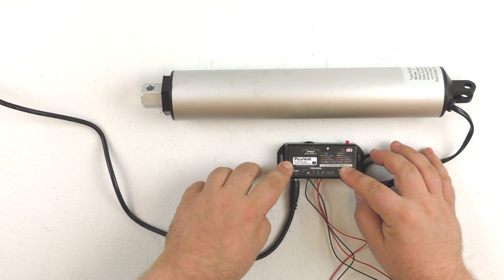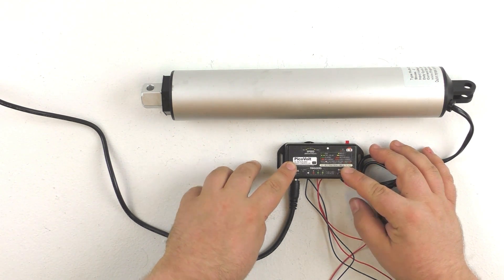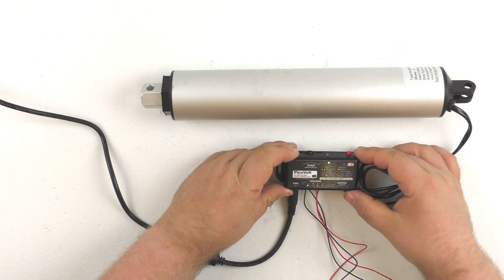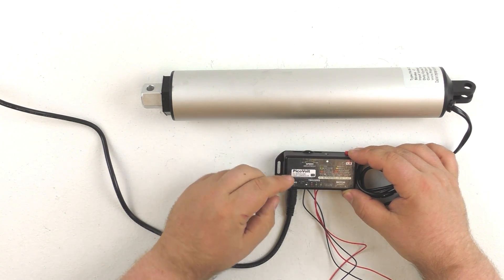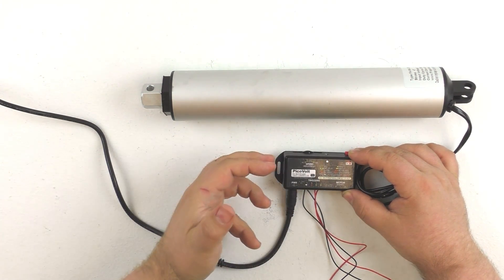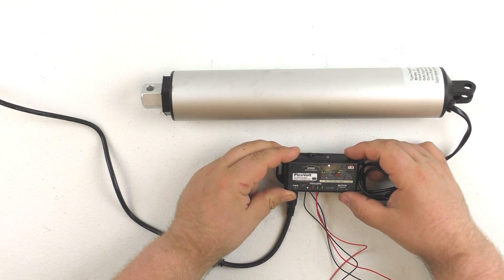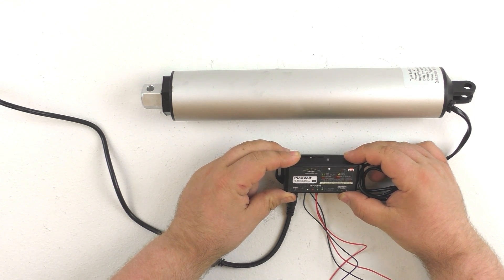So I'm gonna go ahead and just demo real quick how you program the two different inputs. On the top of the unit here there's the record button. In order to choose which input we're going to be programming animation for you just hold down on the record button for 10 seconds.